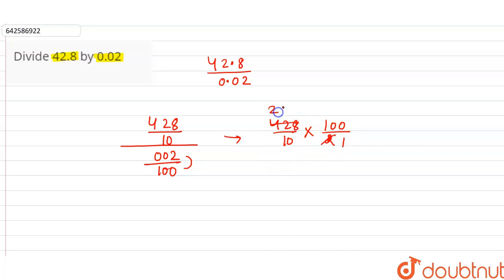2 into 1 is 2, 2 into 2 is 4, 2 into 1 is 2, 2 into 4 is 8. The 10s will be cancelled.